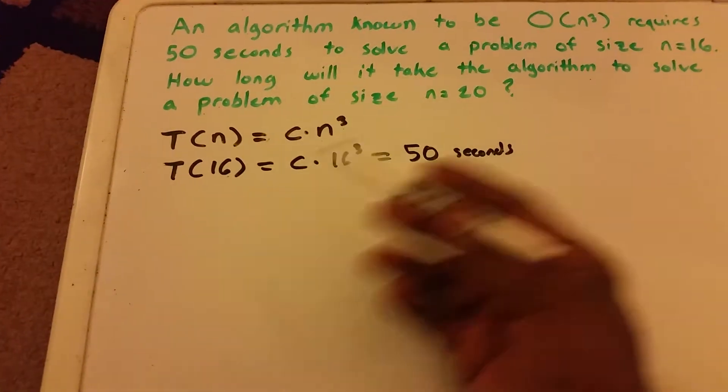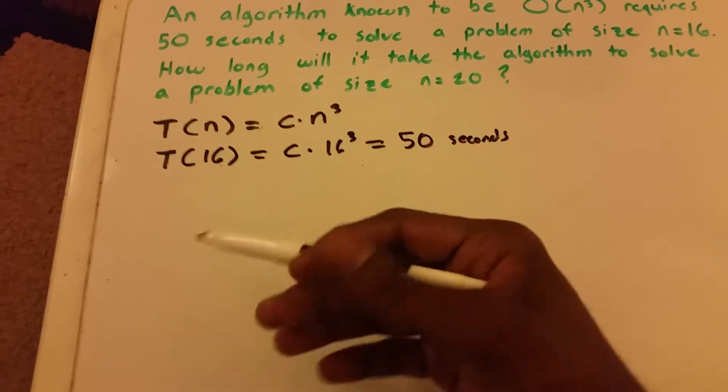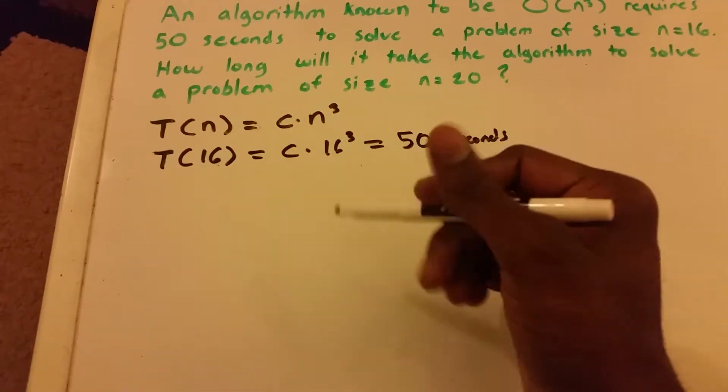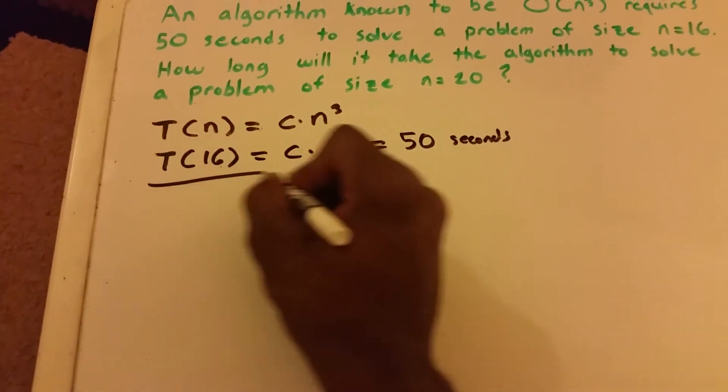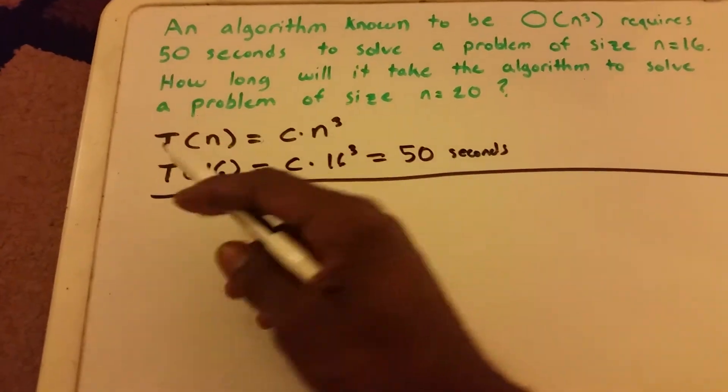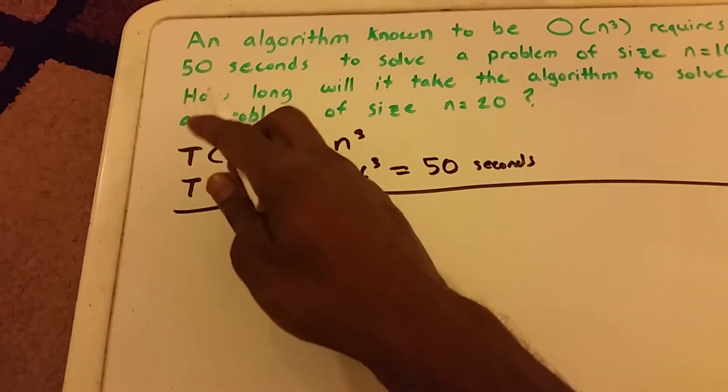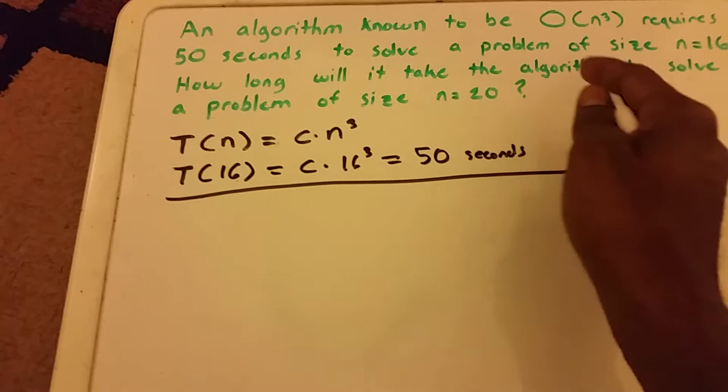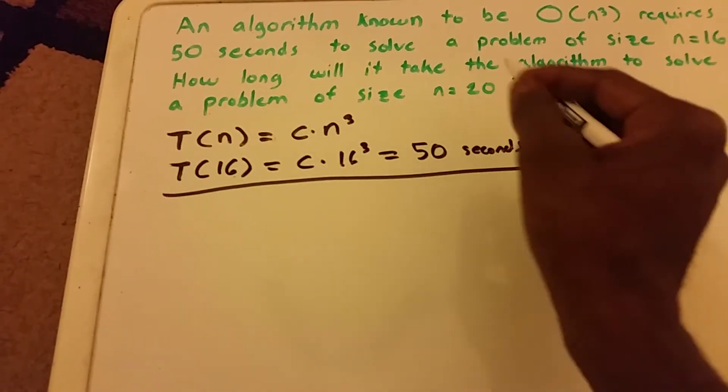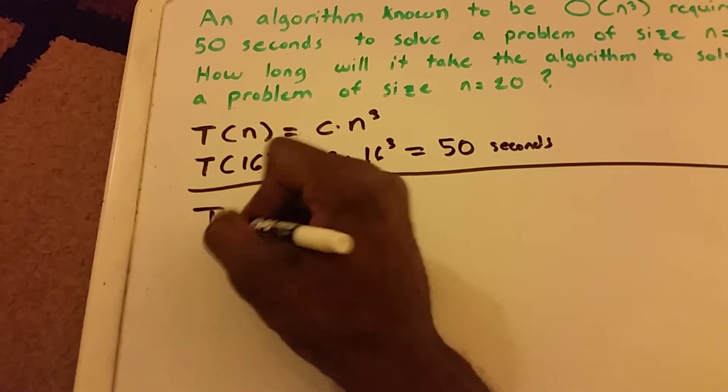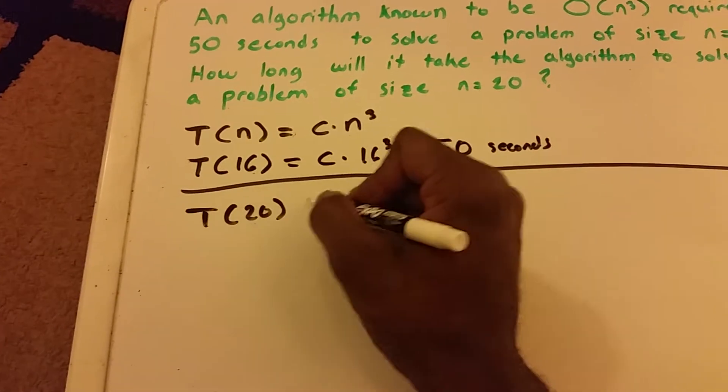So we just set up our equation there for what we know. And now the question is, I'm going to put a little line here so we can go down here, kind of switching off. The question is, how long will it take the algorithm to solve a problem of size n equals 20? So we want to know what T of 20 equals.